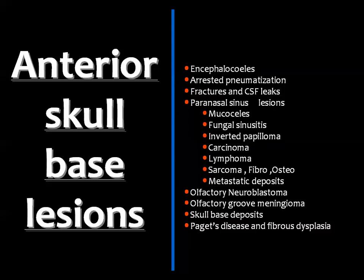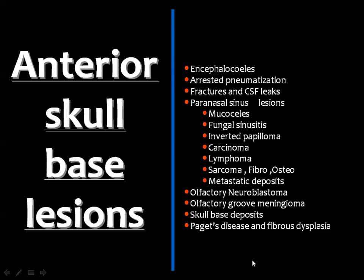The anterior skull base lesions we will discuss include encephalocele, arrested pneumatization, fracture and CSF leaks, and paranasal sinus lesions that can involve the anterior skull base such as mucocele, fungal sinusitis, inverted papilloma, carcinoma, lymphoma, sarcoma, and metastatic deposits. Also, well-known tumors of the anterior skull base include esthesioneuroblastoma (olfactory neuroblastoma), olfactory groove meningioma, and skull base deposits. We will also cover fibrous dysplasia and Paget's disease.